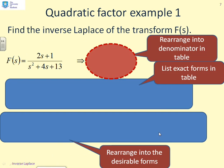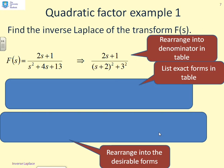We've got a numerical example of how to do partial fractions when you've got a quadratic factor in the denominator, and we're starting with a very simple example where the whole denominator is just a quadratic factor. The first step is to rearrange the denominator into a form in the table. The denominator is s²+4s+13, and putting that in the form from the table gives us (s+2)²+3². This matches one of the e^(−at)sin or e^(−at)cos terms. Next, we note that the numerator doesn't match the form in the table, so we need to match the numerator.